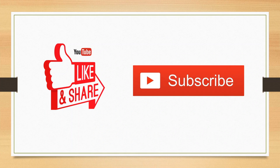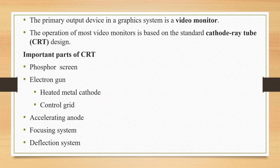Before we start, if you find this useful please share this video, like it, and please don't forget to subscribe. Now, about CRT: the primary output device in a graphic system is a video monitor.